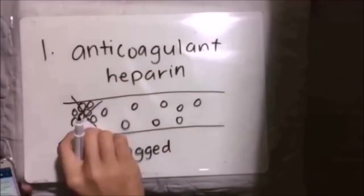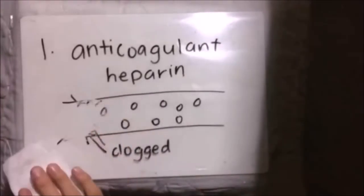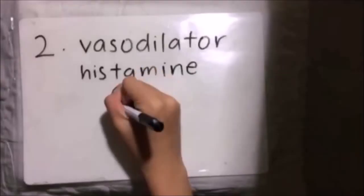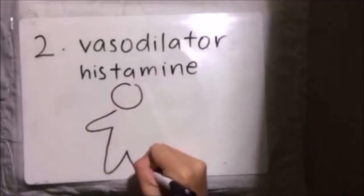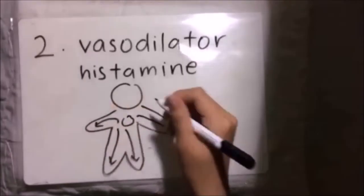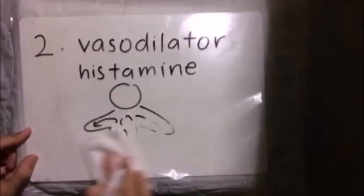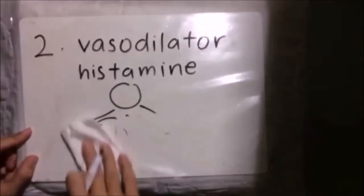Basophil contains a substance called anticoagulant heparin, which prevents blood from clotting too quickly. It also contains a substance called muscle dilator histamine, which provokes blood flow to the tissues. Histamine increases the permeability of the capillaries to white blood cells to allow them to engage phagocytes in the affected tissues.